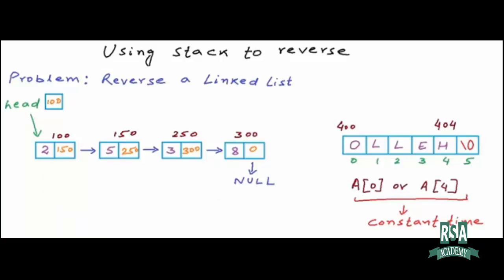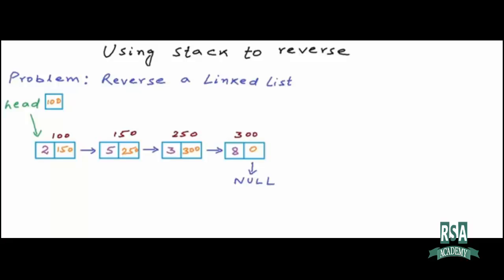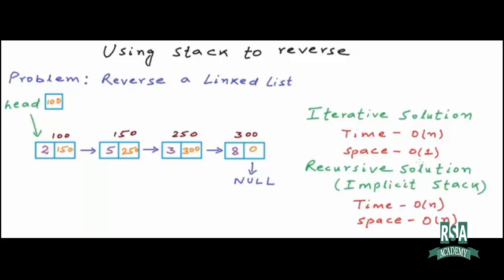We have already seen two approaches to reverse a linked list in this series. One is an iterative solution where we reverse links as we traverse using temporary variables — time complexity O(n), space complexity O(1). Another is a recursive solution, which uses the call stack in computer memory rather than an explicit stack — this is called an implicit stack. The recursive solution also has time complexity O(n), but space complexity O(n).